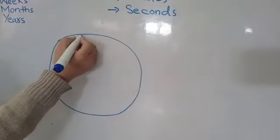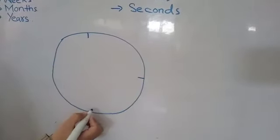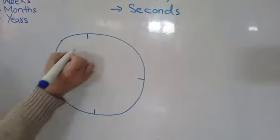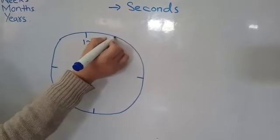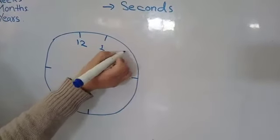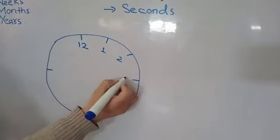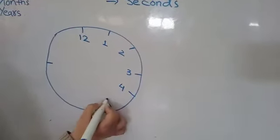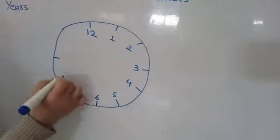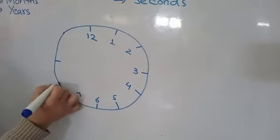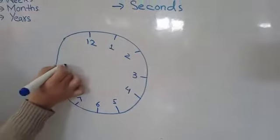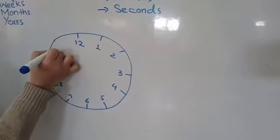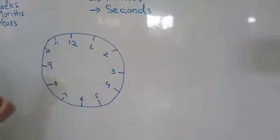It has twelve readings. Six, two, then three, four, five, six, seven, eight, nine, then ten, eleven and twelve.